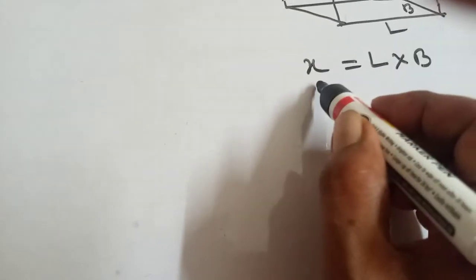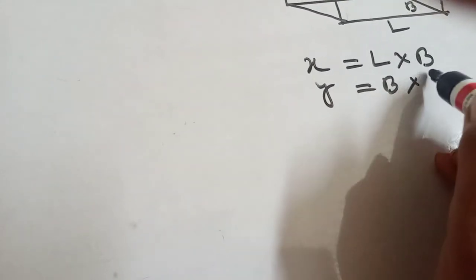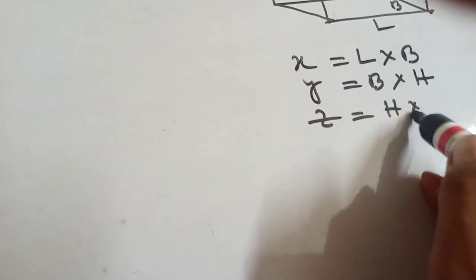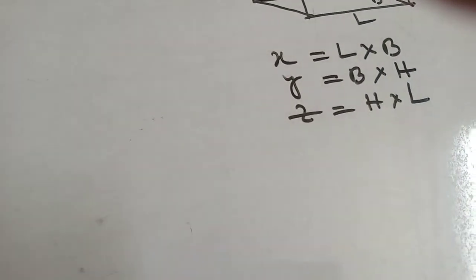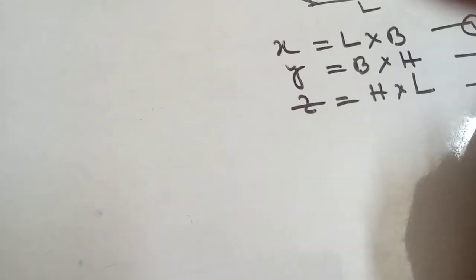Next, y equals breadth into height. And z equals height into length. This is 1, this is 2, and this is 3.